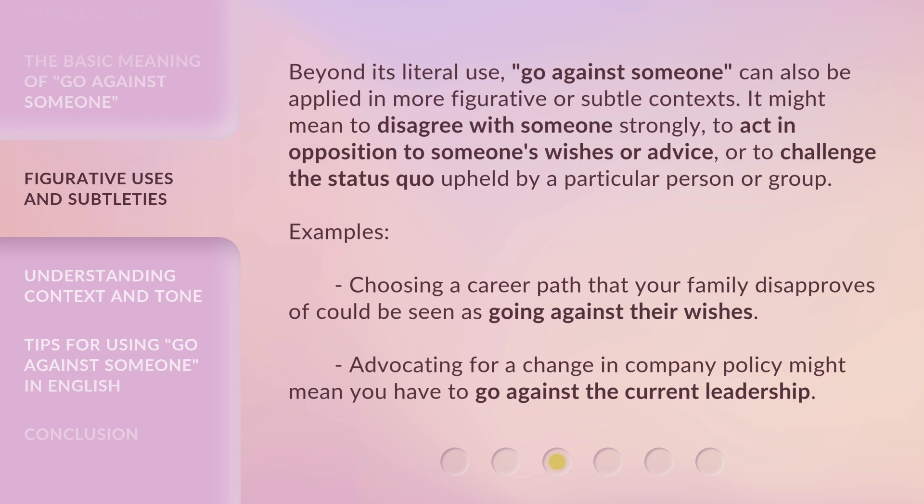Beyond its literal use, 'go against someone' can also be applied in more figurative or subtle contexts. It might mean to disagree with someone strongly, to act in opposition to someone's wishes or advice, or to challenge the status quo upheld by a particular person or group. For example, choosing a career path that your family disapproves of could be seen as going against their wishes. Advocating for a change in company policy might mean you have to go against the current leadership.